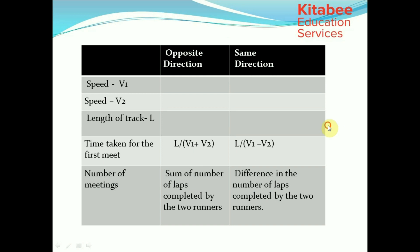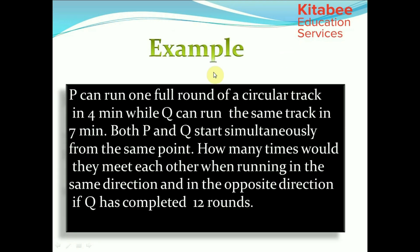Example: P can run one full round of a circular track in 4 minutes while Q can run the same track in 7 minutes. Both P and Q start simultaneously from the same point. How many times would they meet each other when running in the same direction and in the opposite direction, if Q has completed 12 rounds?